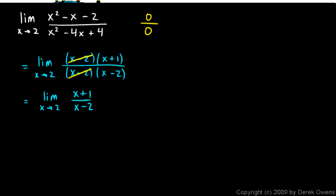In fact, if we go ahead and plug in a value of 2 there, this is going to give us 2 + 1, which is 3, over 0.